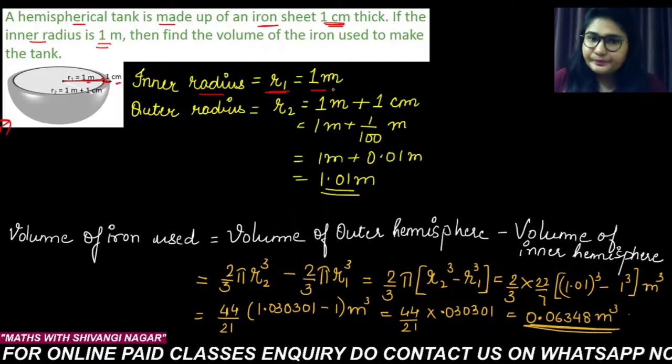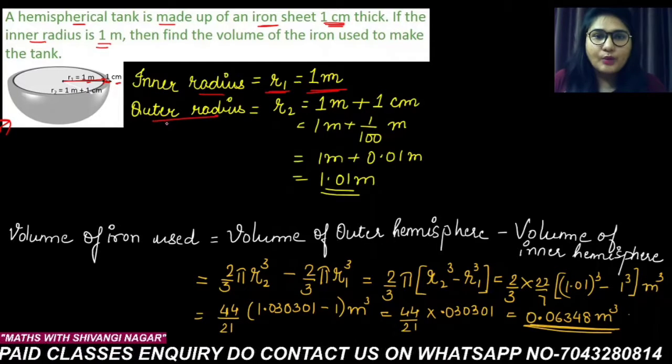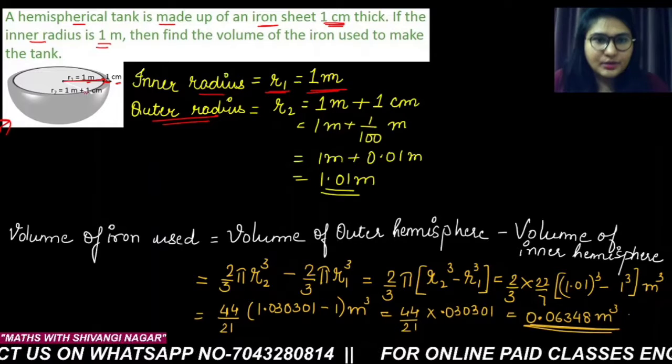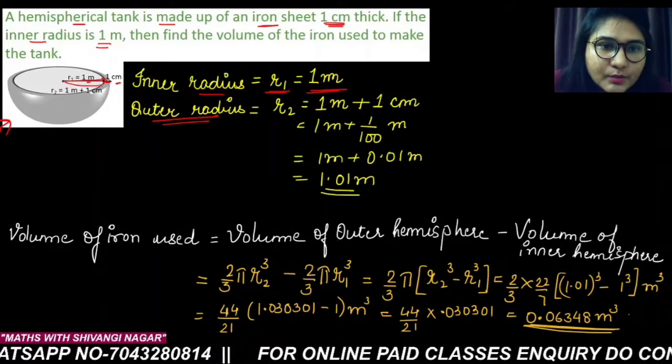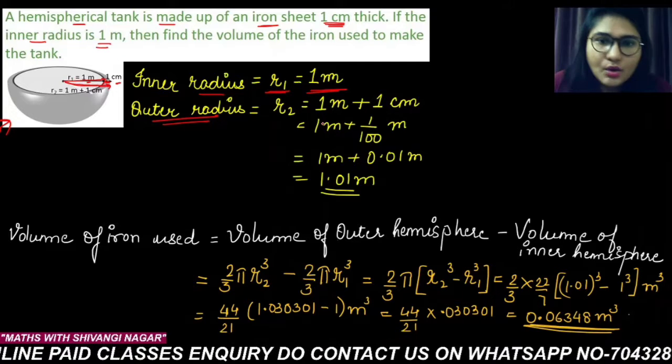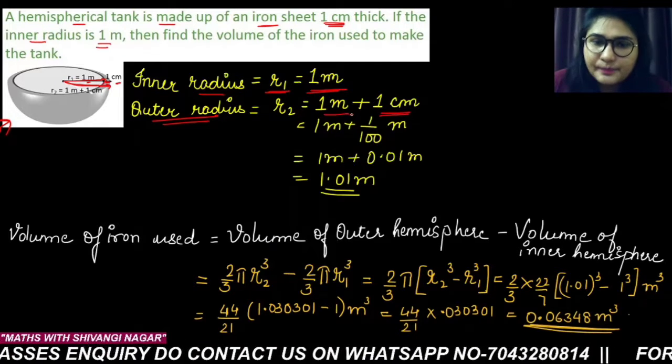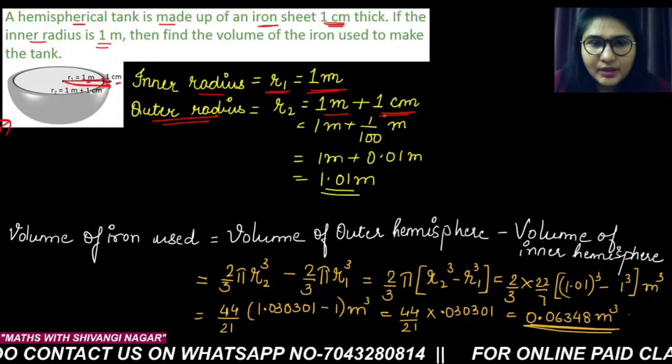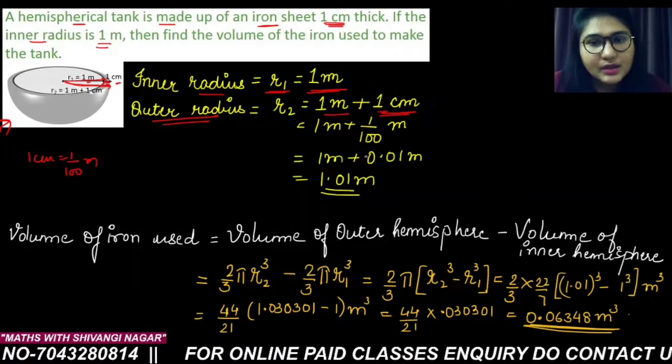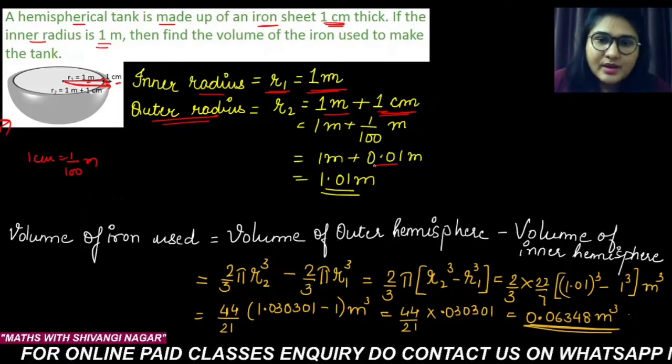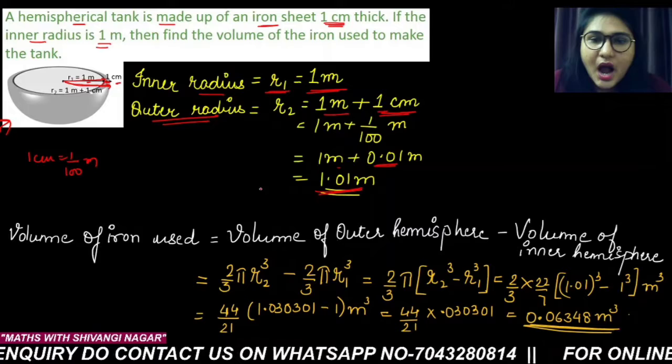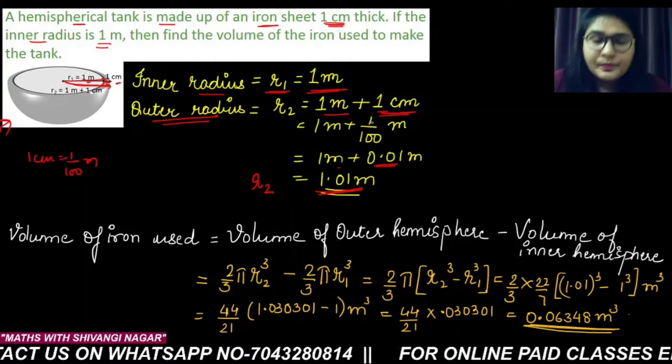And what about the outer radius? The outer radius we have taken as r2, and it is nothing but the inner radius plus thickness. If you see here clearly, this should be the outer radius. So it is the sum of the inner radius plus the thickness. So r2 is 1 meter plus 1 centimeter. Now to add it further, I have to convert the centimeter into meter. I know that 1 centimeter equals 1 upon 100 meter, so I have to just divide this 1 with the 100 and convert it into meter. Now 1 upon 100 can be written as 0.01. So now both the quantities are converted into meters, so I can easily add them. So what is the r2? r2 means outer radius is 1.01 meter.